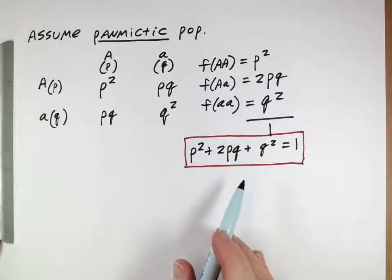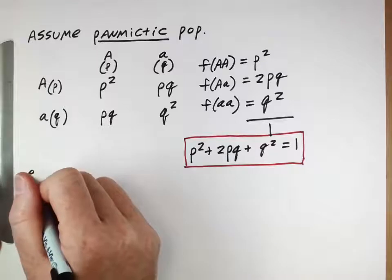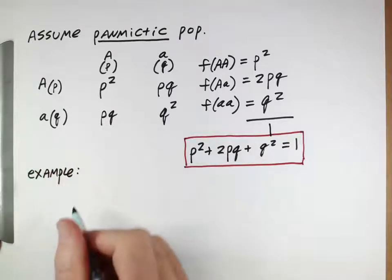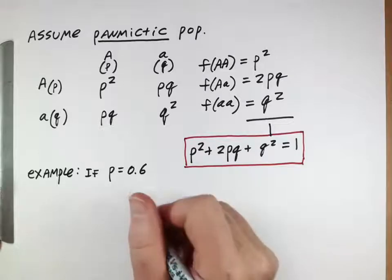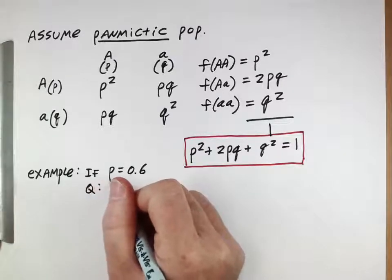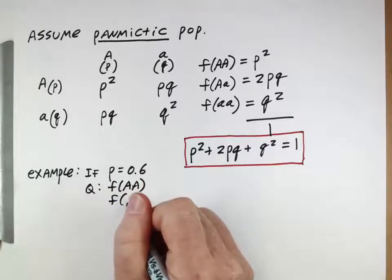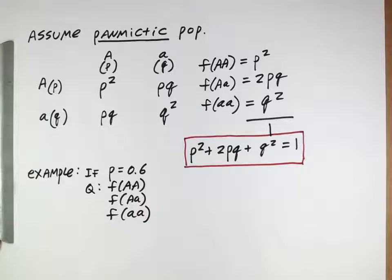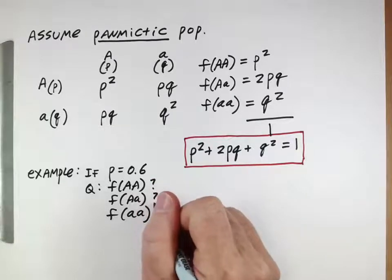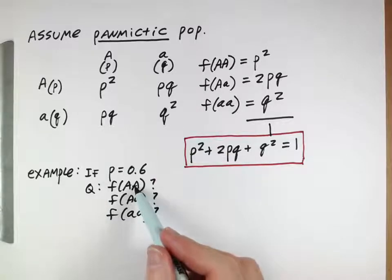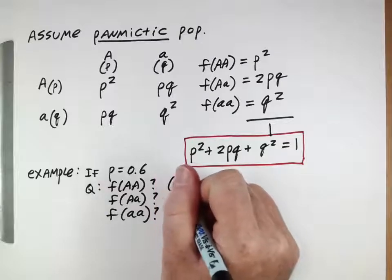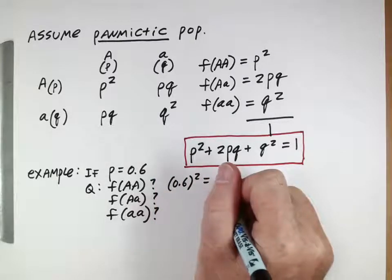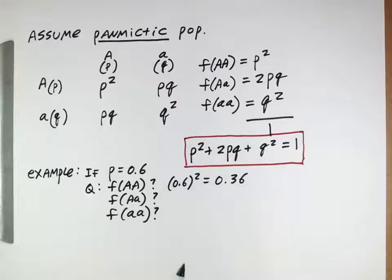These two results can be used to answer questions like the following example. Imagine a population where the frequency of the capital A allele is 0.6. What are the frequencies of each genotype? The frequency of the capital AA homozygote is P squared: 0.6 squared equals 0.36. So 36% of individuals in the population are expected to be this homozygote.